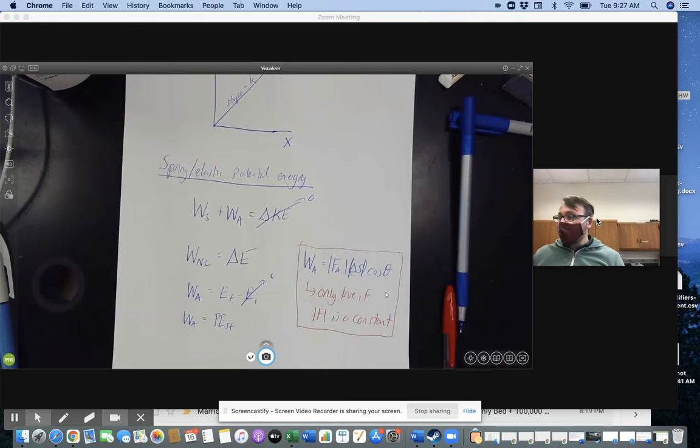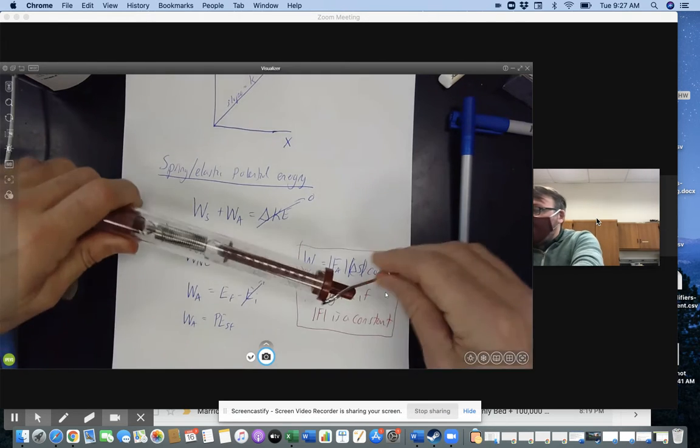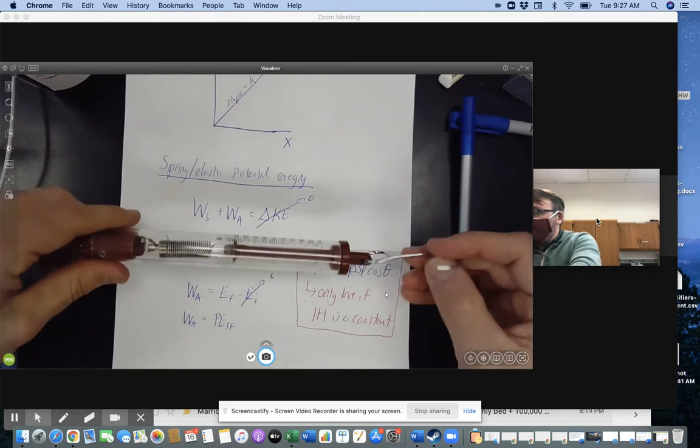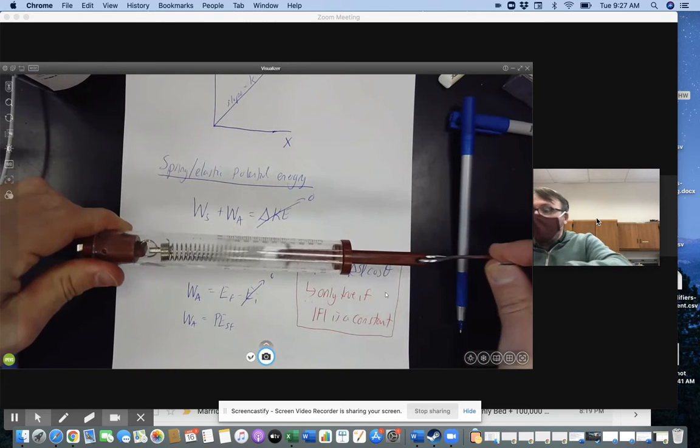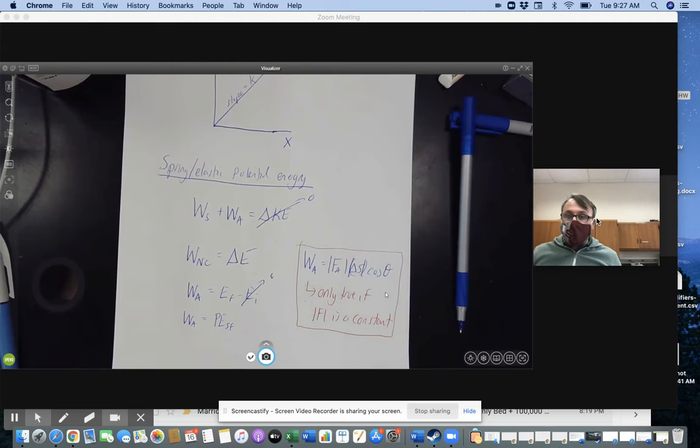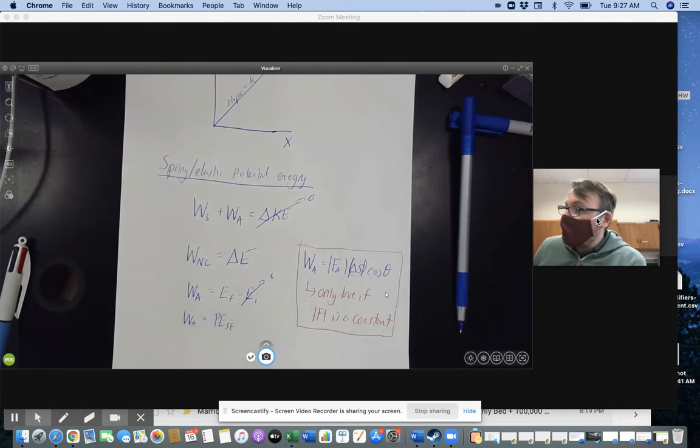We came up with the idea here that the work done by the applied force in stretching the spring is equal to whatever that final potential energy position is for what's going on. We also said that our work equation is problematic because it's only true if the force is a constant.